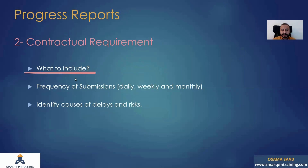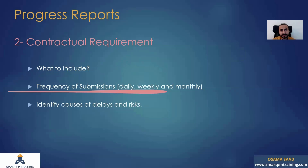It is a contractual requirement. In modern contracts, you will see the list of requirements. Maybe you will need a progress curve, KPIs, and how often you need to submit — the frequency of submissions. Do you need a daily report, weekly or bi-weekly, monthly, quarterly? In many projects, they will need daily, weekly, and monthly.